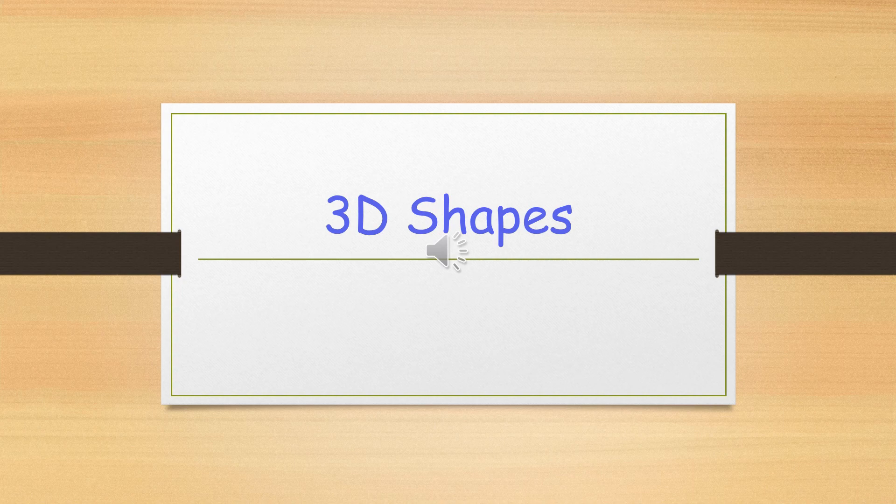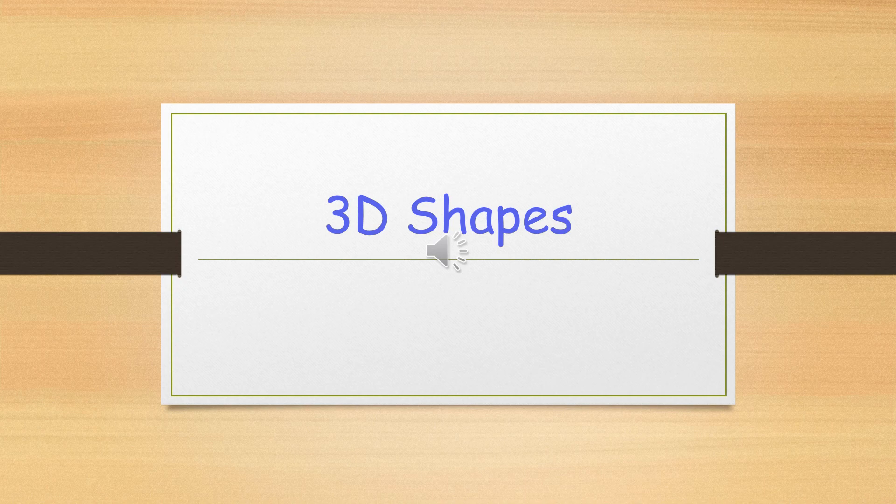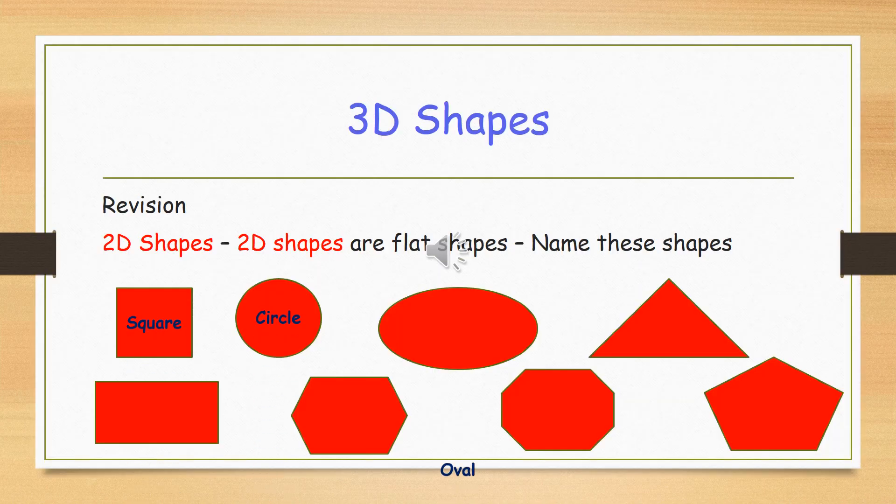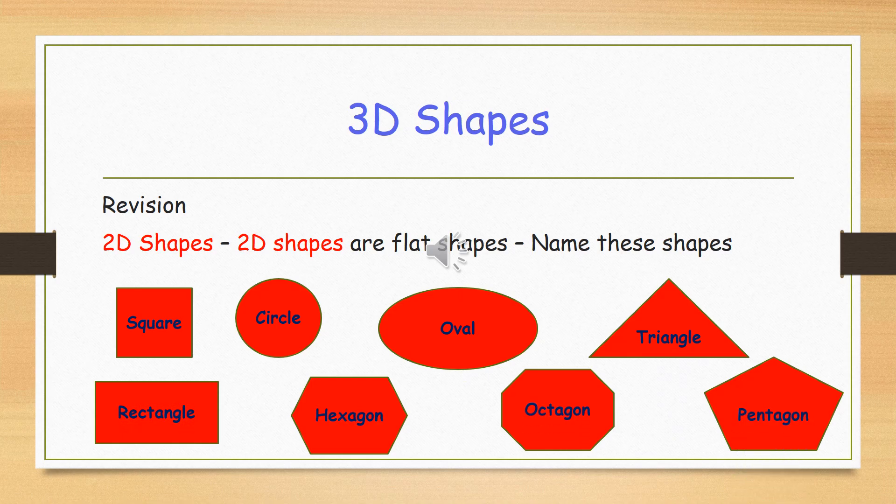So, in order to get around to our 3D shapes, we first have to revise our 2D shapes. A 2D shape is a flat shape. Can you remember the names of these shapes?